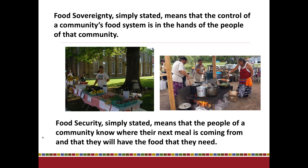When we begin working with food sovereignty — and I'm sure this is an exercise you've already gone through — we want to first talk about what food sovereignty means. This is a very simplistic definition I've come up with through my work in different settings, and you will come up with your own. Simply stated, food sovereignty means that control of a community's food system is in the hands of the people of that community. You could also substitute 'tribe' for the word 'community.'